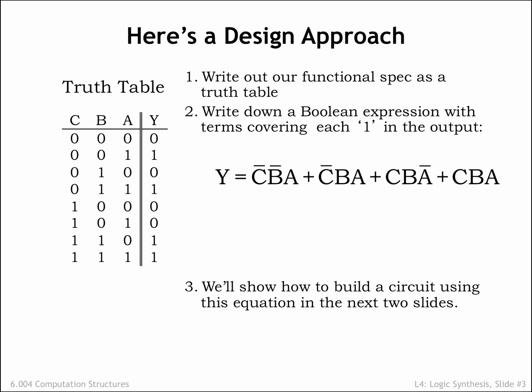Well, Y is true when the inputs correspond to row 2 of the truth table, or to row 4, or to row 7 or 8. Altogether, there are 4 combinations of inputs for which Y is true.